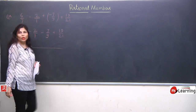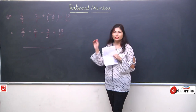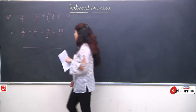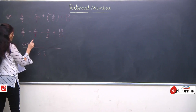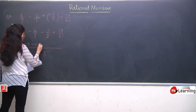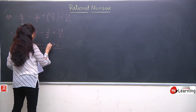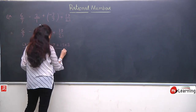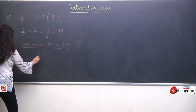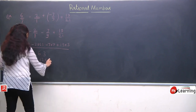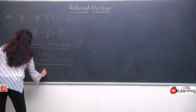Now we can take LCM of 7, 1, 9, and 21. They all appear in the table of 63, so LCM is 63. Then: 6/7 → multiply by 9 → 54; 2/1 → multiply by 63 → 126; 7/9 → multiply by 7 → 49; 19/21 → multiply by 3 → 57. So we get: 54 - 126 - 49 + 57 upon 63.